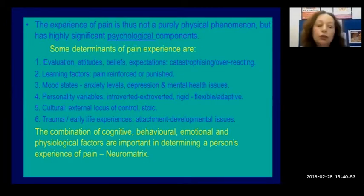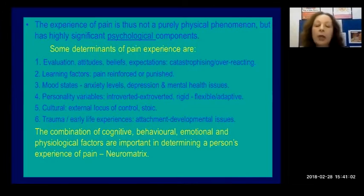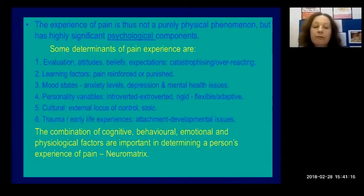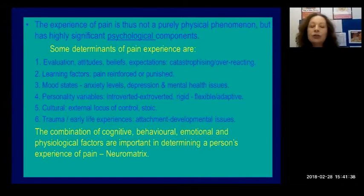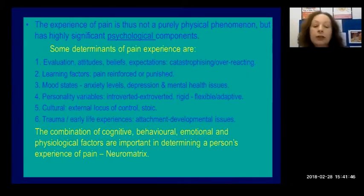Last but not least, we need to look at early life experiences. Some people have trauma in their early life, perhaps abuse, that can affect them long term. Attachment history is also relevant — some people who come to us are very dependent and have had a long-term attachment history. The idea of self-management can be difficult for them. Psychologically, we're looking at the combination of the cognitive, behavioural, emotional, and physiological factors in determining a person's experience of pain — what we call the neuromatrix.